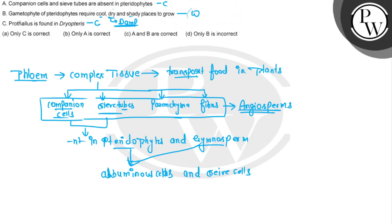Now we have the options. A says only C is correct - this is wrong, we have two corrects, A and C. B says only A is correct - wrong, we have two corrects. C says A and B are correct - but B is wrong, so this is wrong. D says only B is incorrect - this is right. Only B is incorrect is the right option.